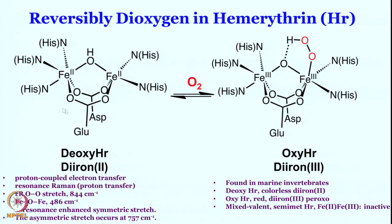This job is done in invertebrates or marine invertebrates by hemerythrin. Hemerythrin has two iron centers. This is a reversible dioxygen binding in hemerythrin. This is the reduced form, also known as deoxy-hemerythrin. The iron centers are in the +2 oxidation state. Each iron has 3 histidines on one of them, and on the other one we have 2 histidines.